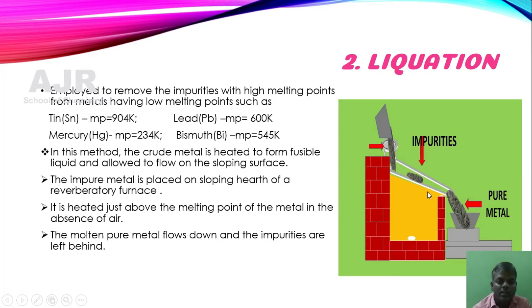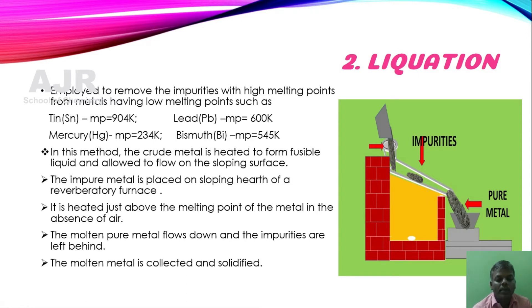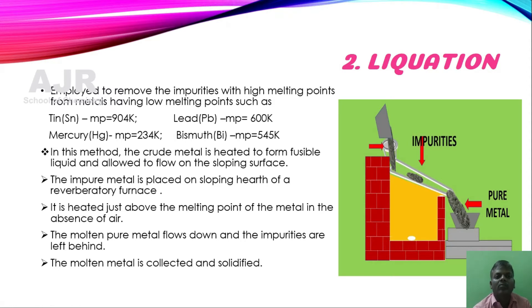The molten pure metal is collected separately and then solidified — that is, converted from the molten stage into the solid state.